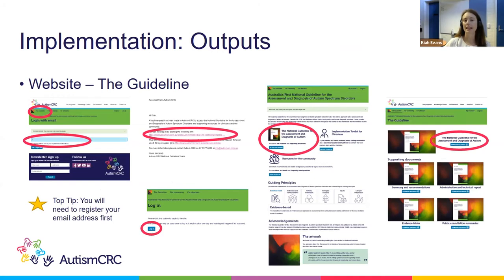The website has three main face pages. The first is the guideline page, where you can enter your email address previously registered with the Autism CRC to access the national guideline documentation. This administrative process allows us to track web metrics of what people are accessing, ensuring future resources align with clinician interests, and to capture contact details so we can notify clinicians of updates.